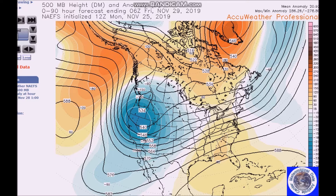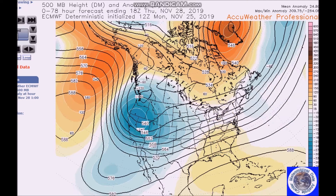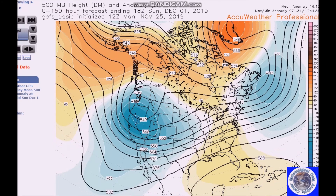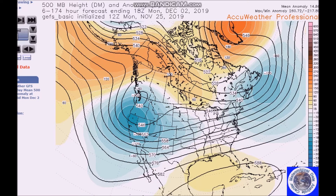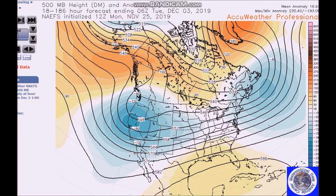For November 28th through December 2nd, we have above-normal heights across the northeast Pacific and across Canada, joining another positive height anomaly center near Greenland. We have a trough in the west — we start off with a ridge, but then a trough takes over with a zonal flow across the eastern states. Below-normal heights develop late in the period, and the models are in good agreement.